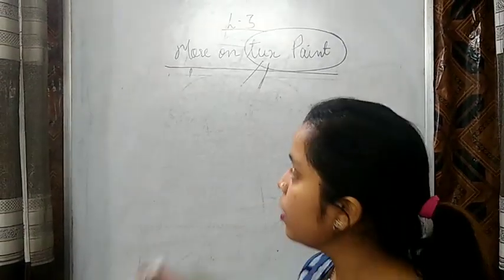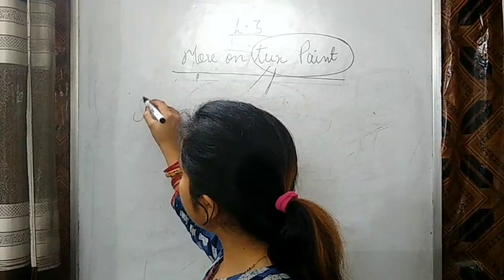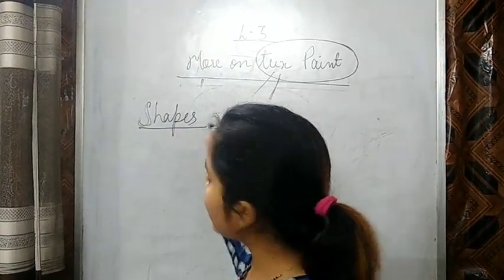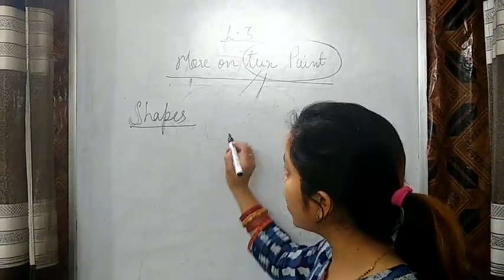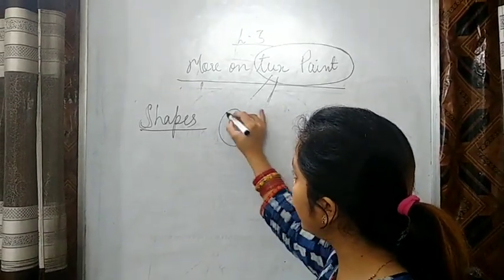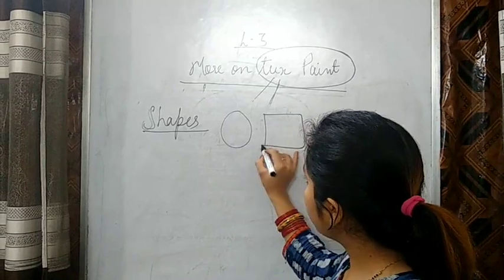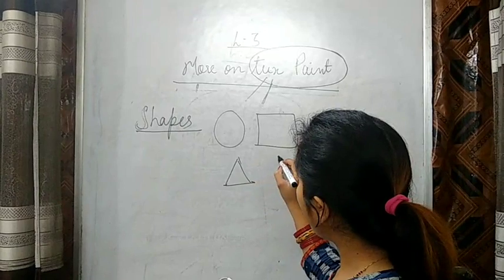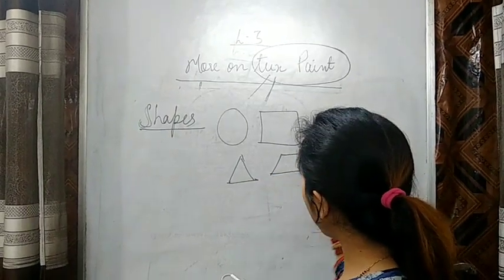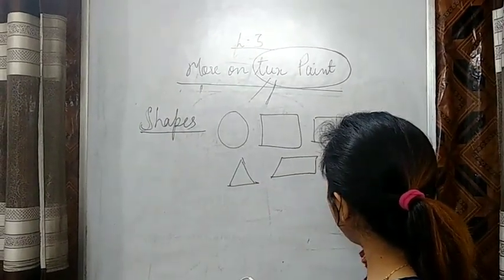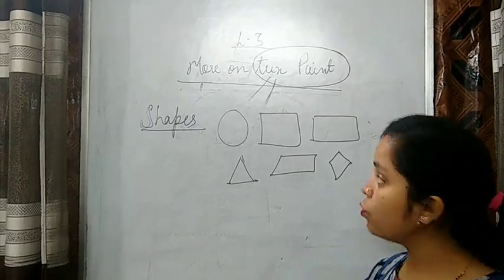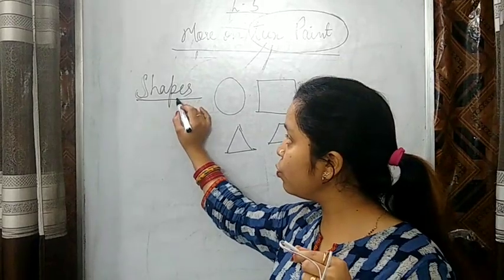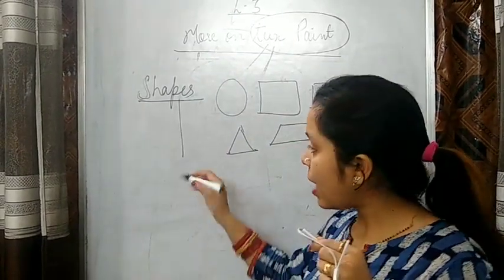The first tool you will study in this chapter is the shape tool. Using the shape tool you can draw different shapes like circle, square, rectangle, triangle, parallelogram, pentagon, hexagon. If you have to draw different shapes, for drawing these different shapes we use the shape tool.